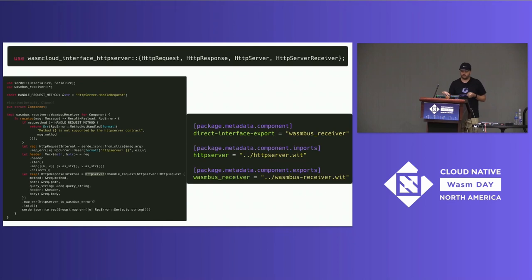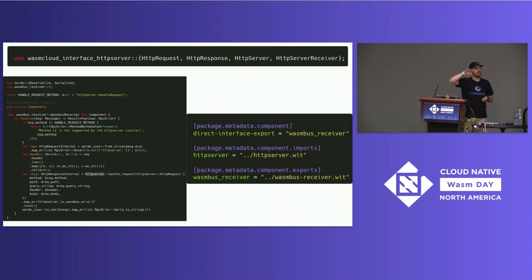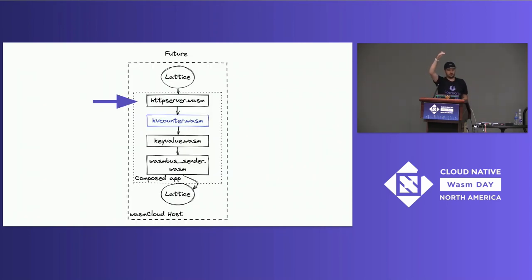Inside the original block, we're receiving this message and matching to make sure it's the proper type — WasmCloud-specific codec matching — then passing it off to handle_request on the HTTP server. In the cargo.toml, in this new world you tell it where your interface is: we're importing an interface called http_server and exporting something called wasmbus_receiver. So it implements the receive function that calls something it imports, which is the HTTP server — it doesn't know which HTTP server, it just knows something on the other end will implement that contract.